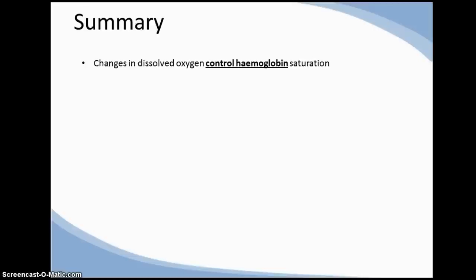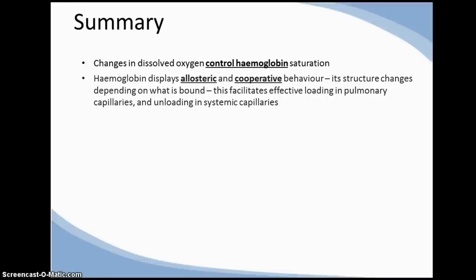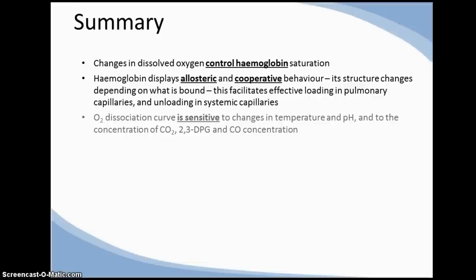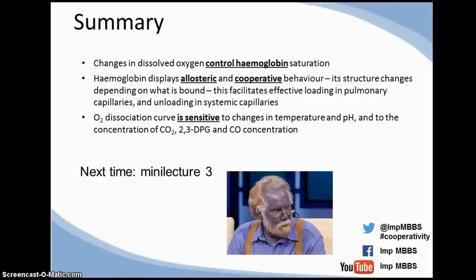So, although negligible by volume, the role of dissolved oxygen in oxygen transport should not be underestimated. Small changes can have profound effects on haemoglobin saturation and oxygen loading and unloading. Haemoglobin displays allosteric and cooperative behaviour. These characteristics make it ideal for loading with oxygen in oxygen-rich environments like the lungs and for unloading in low oxygen environments like respiring tissues. The oxygen dissociation curve is sigmoid-shaped and sensitive to changes in temperature, pH, and to changes in the concentration of CO2, 2,3-DPG, and carbon monoxide in the blood. Next time, we'll discuss haemoglobinopathies and how they affect oxygen transport, and we'll find out how a single electron can give this gentleman quite a cyanotic complexion.